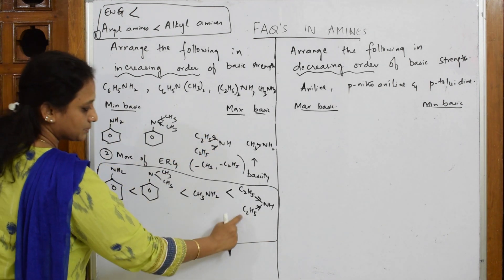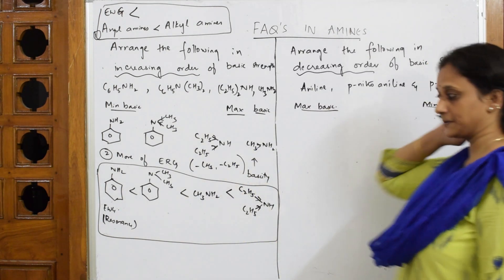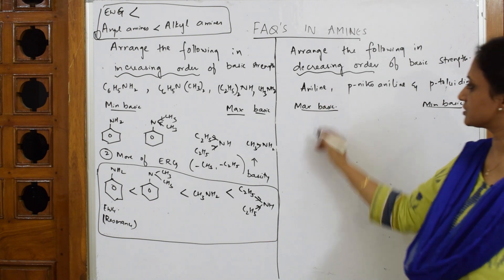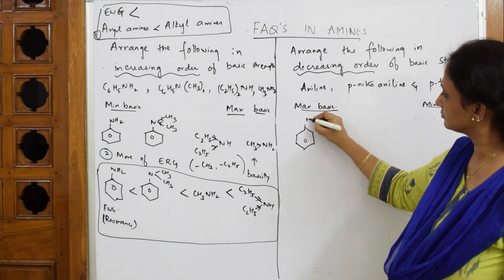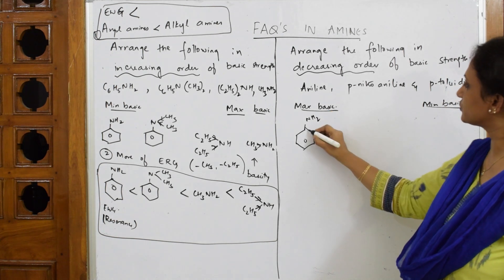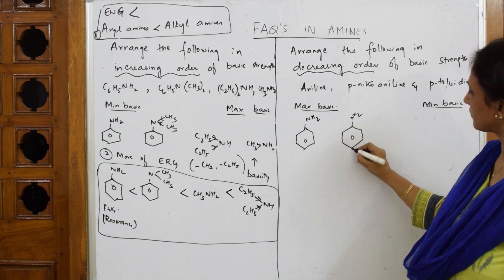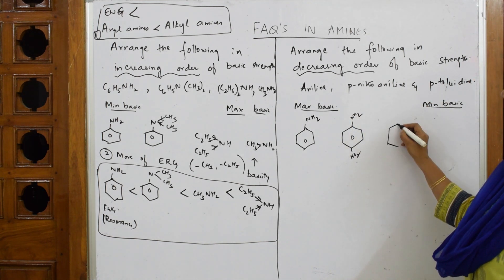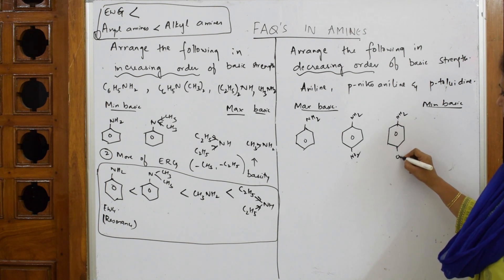para-nitroaniline, para-toluidine. According to this sequence, arylamine is least basic. Okay, now you have an electron withdrawing group. You have to be